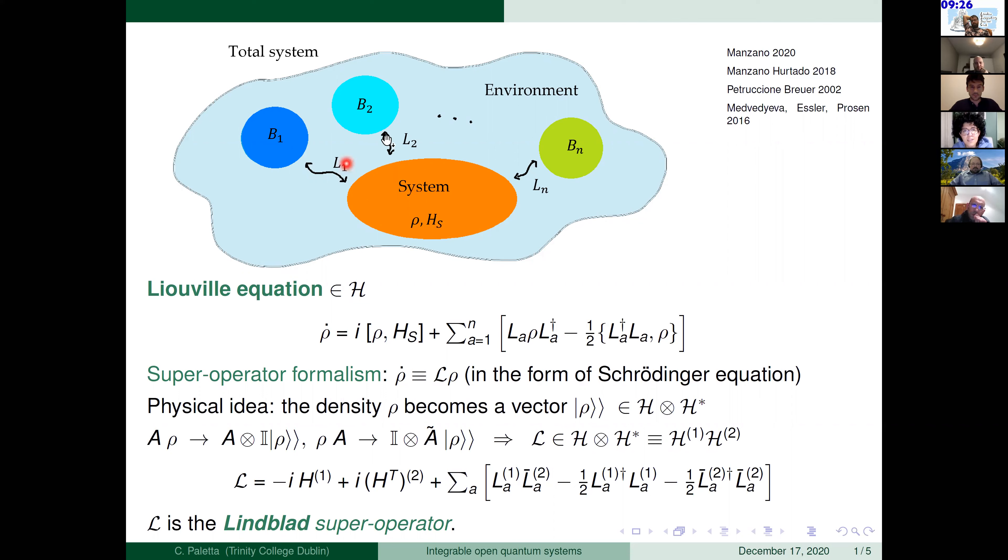This system is in touch with the environment, in particular with some baths or some reservoir, and the environment is described by operators that are called Liouville operators or also jump operators. Under some approximation the dynamics of this system can be described with the Liouville equation. In the Liouville equation everything will act on a Hilbert space H. Here it will appear the density matrix of the system and these jump operators that I introduced before and the sum will run over all the possible baths that we have in our system.